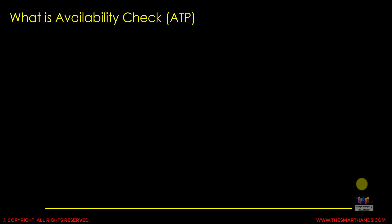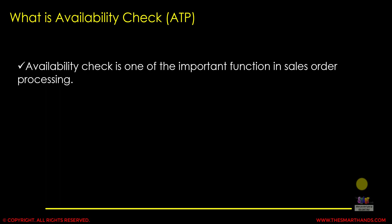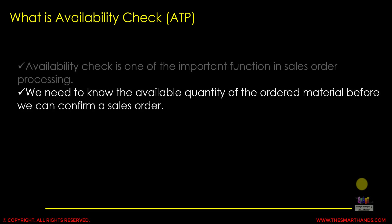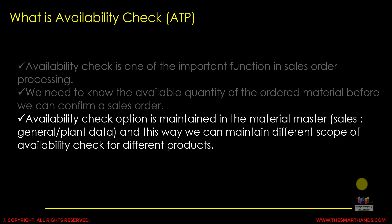Let's first understand what ATP or available to promise — also known as availability check — means. Availability check is one of the important functions in sales order processing. We need to know the available quantity of the ordered material before we can confirm a sales order. The availability check option is maintained in the material master record under the general plan data and under sales.